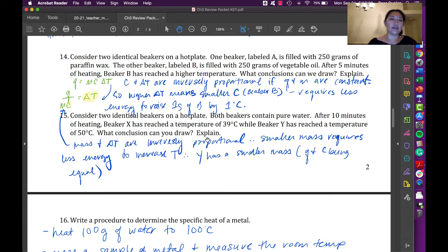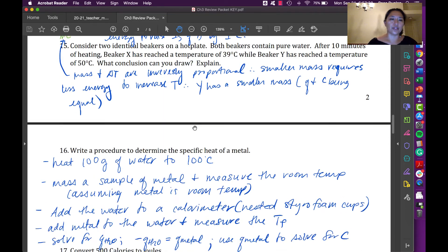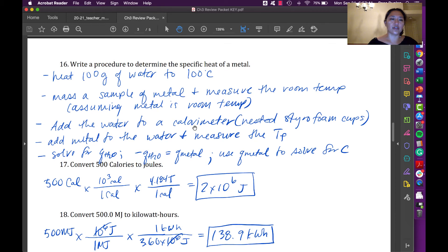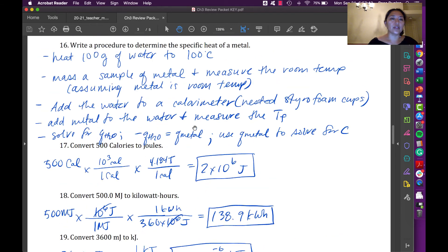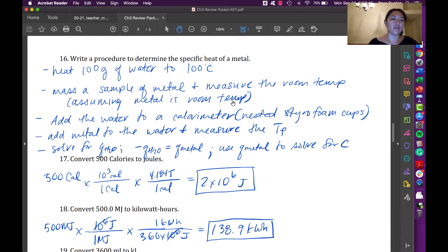And then here, can you think through what the meaning of that Q equals MC delta T equation is, which is important, which things are related and which things aren't. And then here, so the heat, the specific heat of a metal, that goes back to the gizmo, that also goes back to the heat demonstration we did in class.